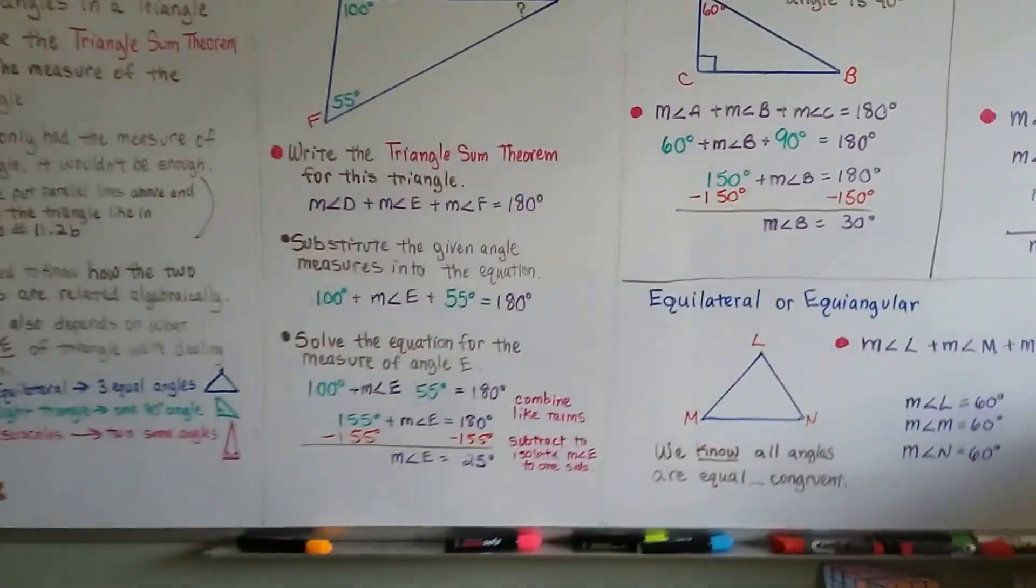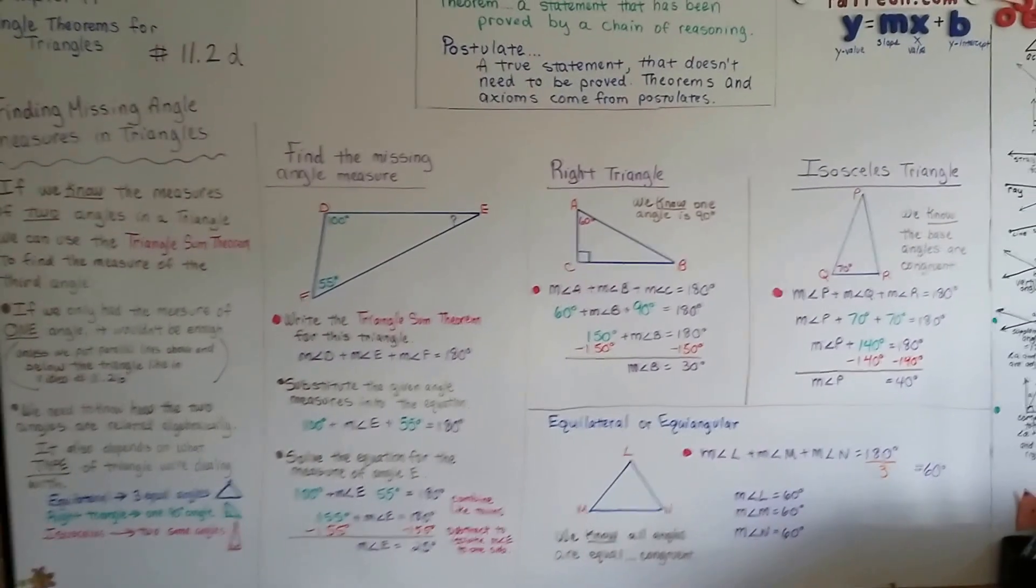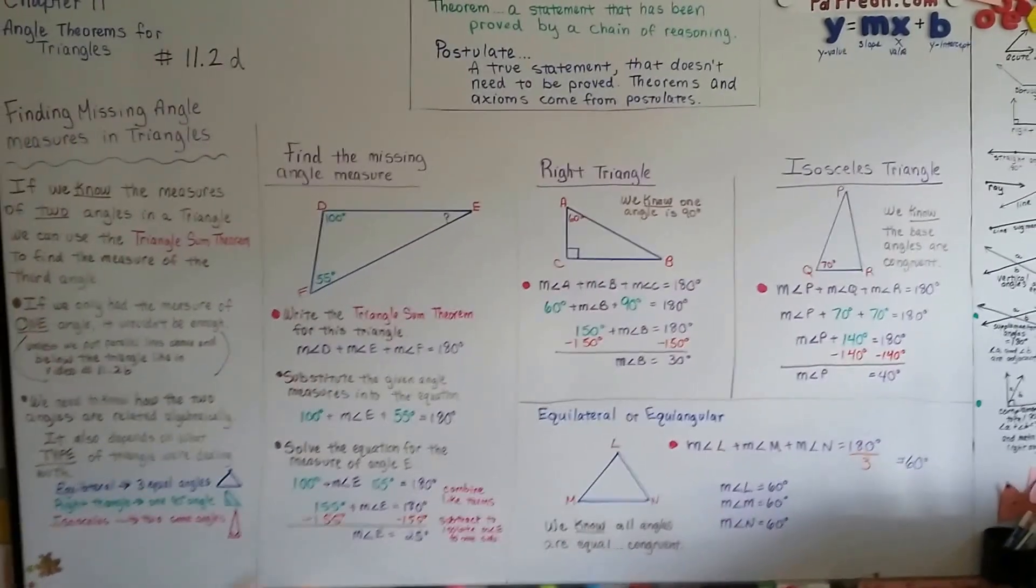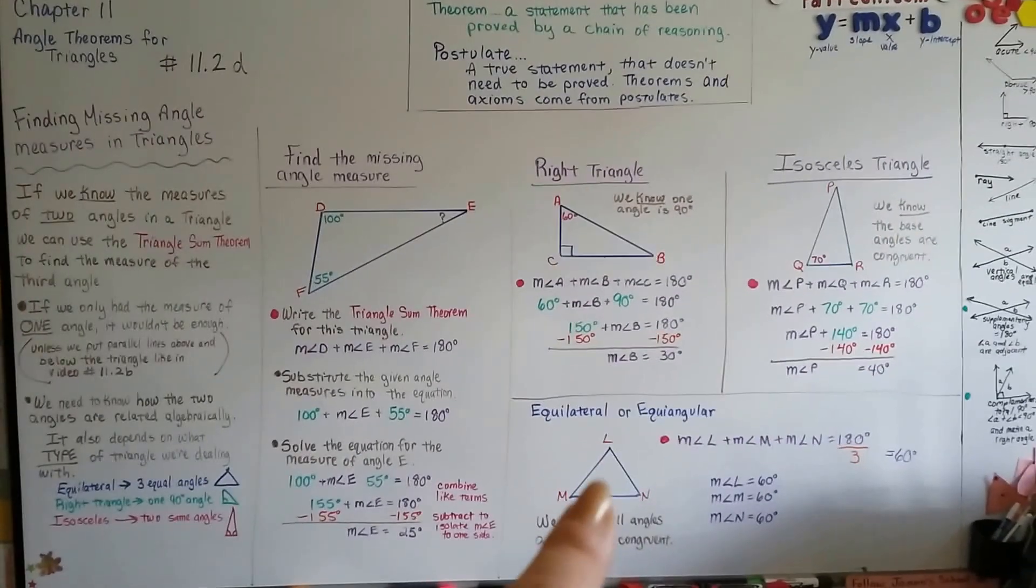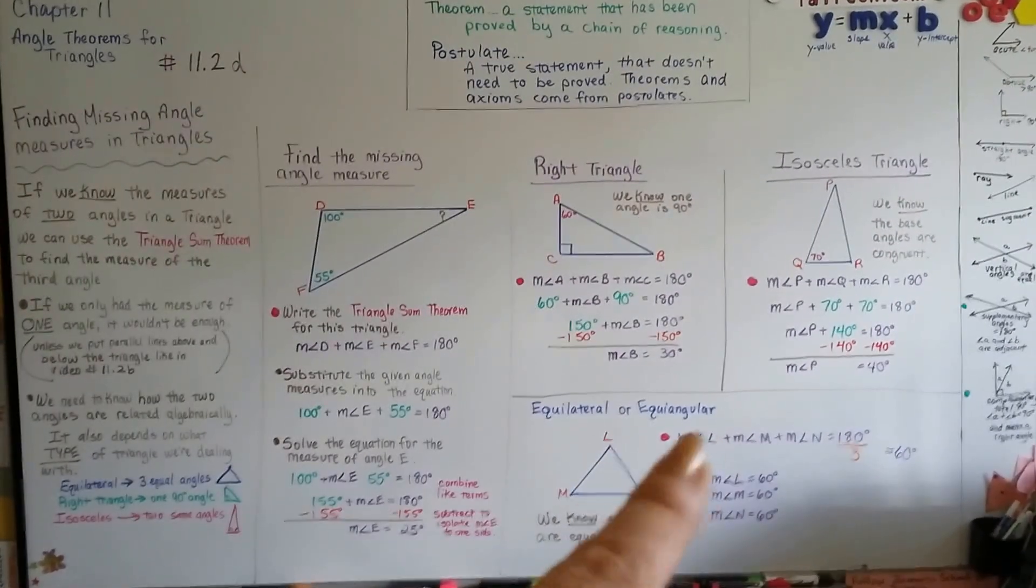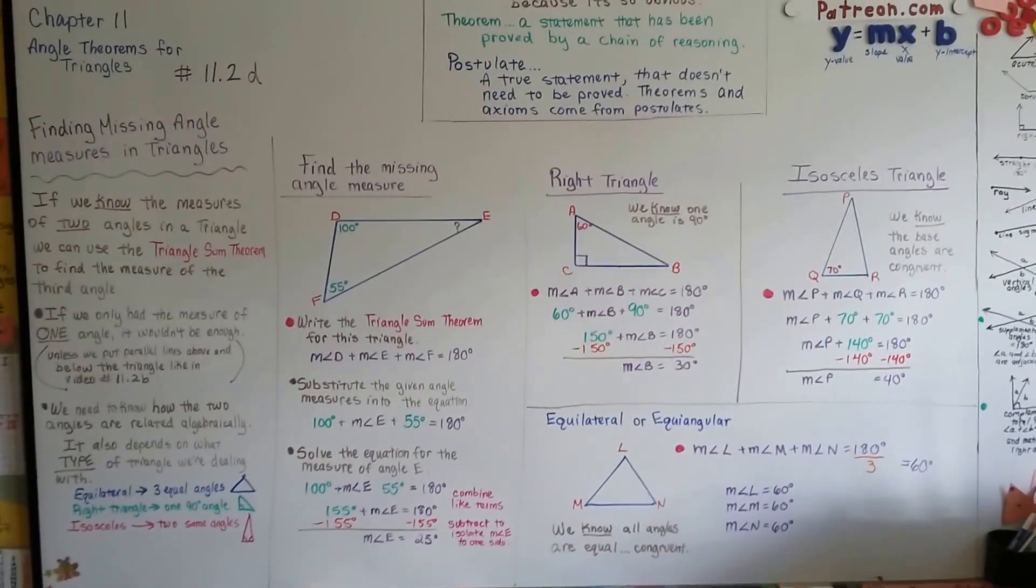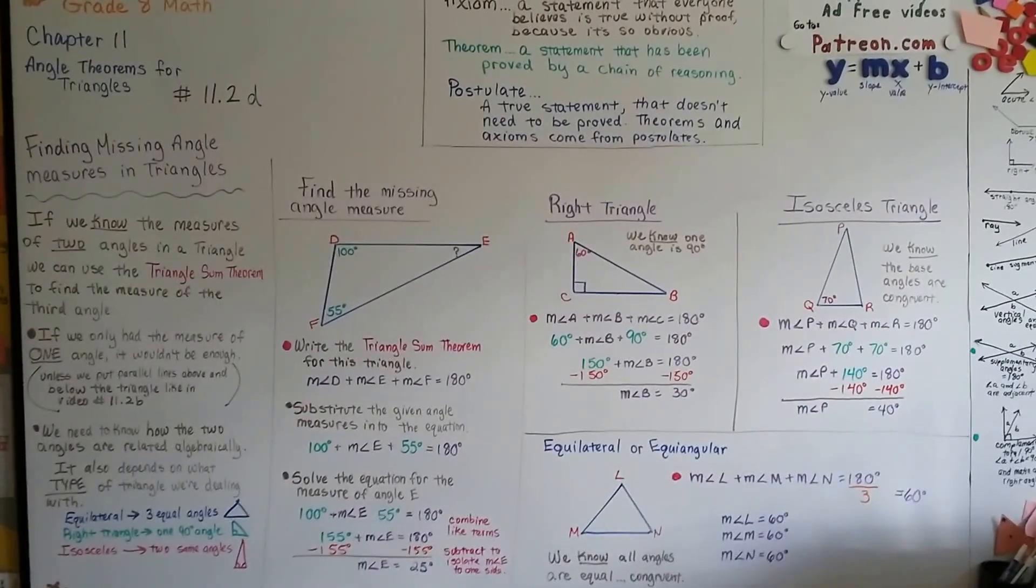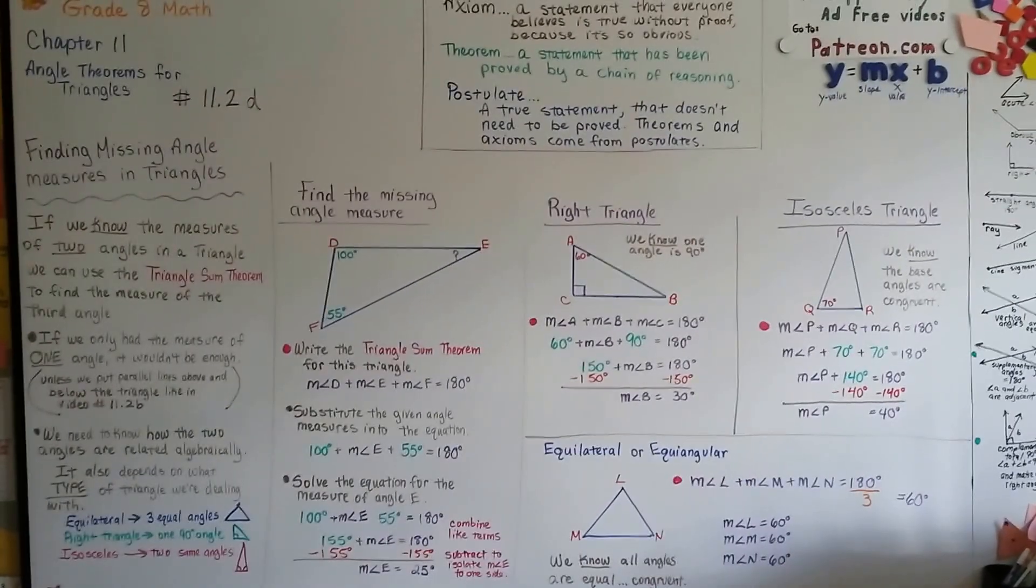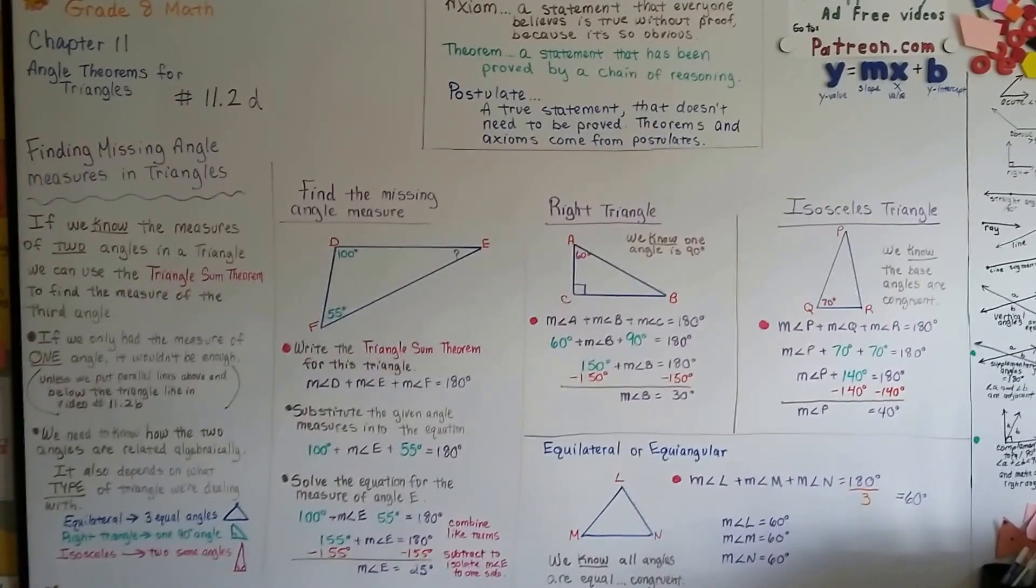I hope you understood that wasn't too bad. It's all common sense, and if you know the rules for the triangles, it really makes it easy. Just knowing that there's a 90-degree angle in a right triangle, or that equilateral triangles all have the same internal measures, or that an isosceles has congruent base measures—that'll help you. Rules are great, they keep things in order and they make us understand what's going on. We're going to continue on, and I'll see you in 11.2e. Bye!